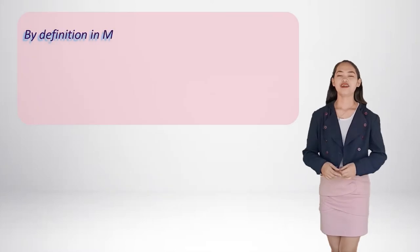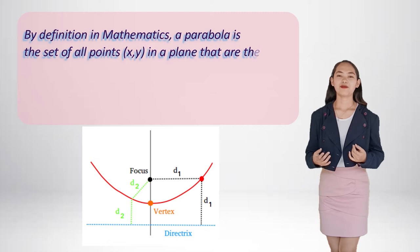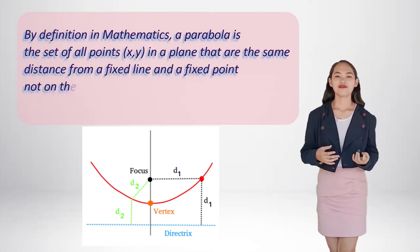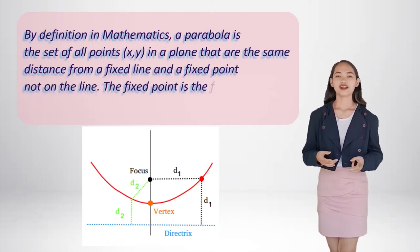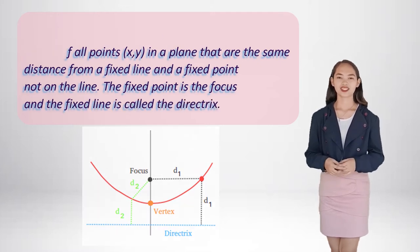By definition in mathematics, a parabola is the set of all points x, y in a plane that are the same distance from a fixed line and a fixed point not on the line. The fixed point is the focus and the fixed line is called the directrix.